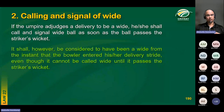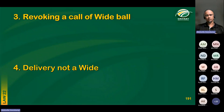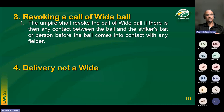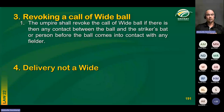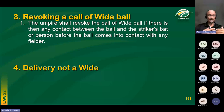The reason you delay the call is to avoid revoking it. On one occasion I called wide too quickly — it was a spinner bowling, the ball looked wide, but then the batter played a late cut shot and it went to the boundary. So I was calling and signaling wide while the ball was going to the boundary because the batter played a late cut shot. That is the main reason why you need to delay the call of wide until it passes the striker's wicket. Practically: wait until it passes the striker's wicket, and if there's been no contact with the striker's bat or person, then call and signal wide.